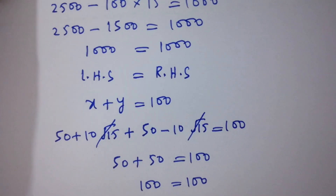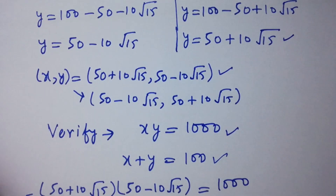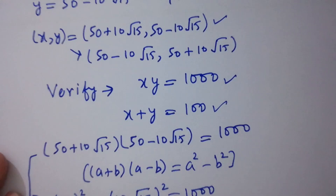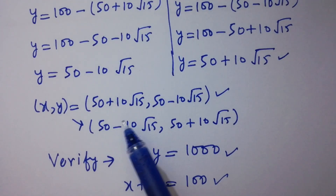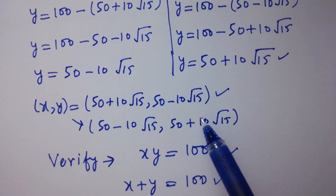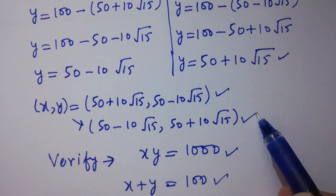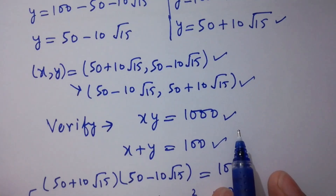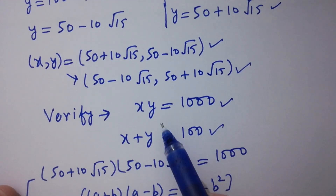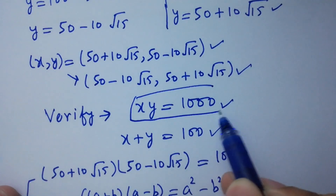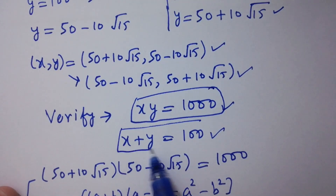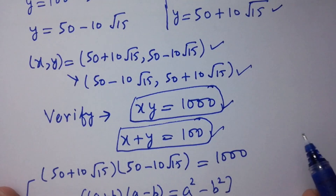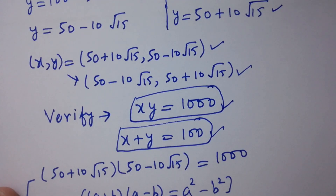Both cases are verified, which shows that the values of x and y — 50 plus 10 root 15 and 50 minus 10 root 15 — satisfy both equations xy equals 1000 and x plus y equals 100. Thanks for watching this video. Please subscribe to this channel to get notifications of new videos. Okay, bye.